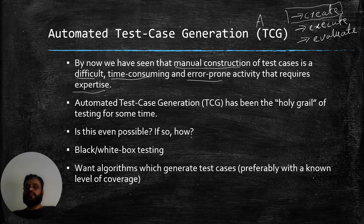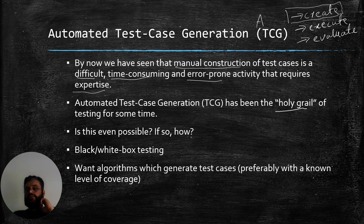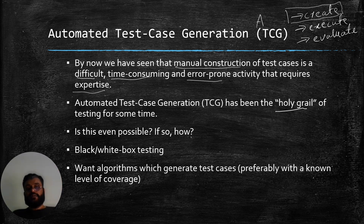Some tools are very good at creating test cases; some will go on to execute those tests on the system under test; and very few tools will actually assign verdicts on the outputs of tests. Automatic test case generation has remained the holy grail of testing — the testing community is very much interested in how we can automatically create a lot of tests that can save testers' time and help them test underlying systems more efficiently.